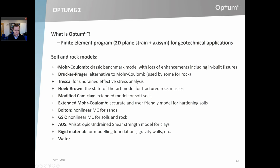For soil and rock models, all the basic materials are available: Mohr-Coulomb, Drucker-Prager, Tresca. More complex materials include Hoek-Brown for modeling fractured rock masses, modified Cam Clay — actually an extended version for soft soils — and the extended Mohr-Coulomb model, which is very similar to the so-called hardening soil model for sands or similar materials. Bolton's model is a nonlinear Mohr-Coulomb envelope for sands, and GSK is similar. A good range of materials from the more basic to the more complex are available.